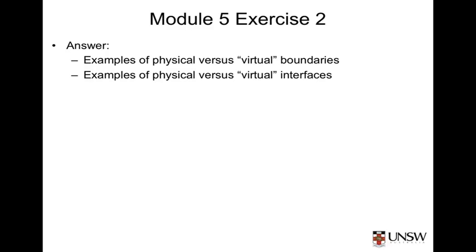Some people might have also included interfaces that do not exist in the physical sense but still need to be specified. For example, the interface between our house and free-to-air TV and radio might be absolutely critical. That interface is in the form of electromagnetic radiation that must be intercepted, received, amplified and processed from within the house. The interface will result in requirements for antennas and suitable cabling within the house, even though no one can actually see or feel that external interface. I hope you can see how boundaries and interfaces impact on the engineering of our systems.